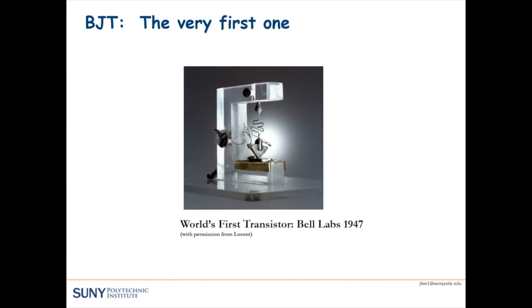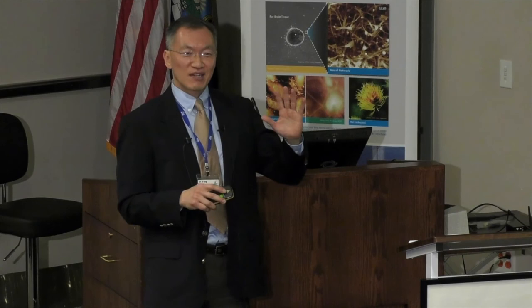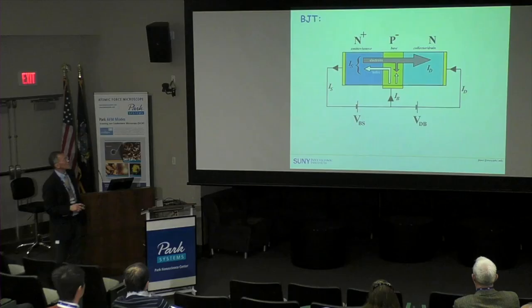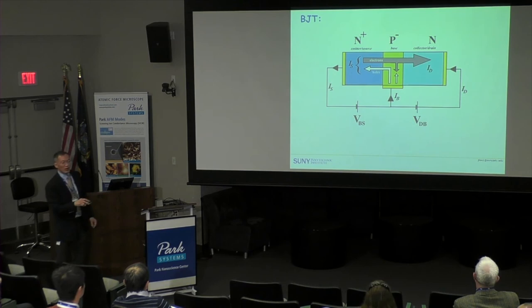Moving on to the next device: the very first transistor, from Lucent, was a point-contact transistor, very much like a bipolar junction transistor. Our device is analogous — still in early development, so somewhat kludgy. Many people know MOSFETs, but fewer know bipolar junction transistors, even though BJTs were the dominant transistor and people made CPUs with them until MOSFETs came along. In our device, rather than calling the terminals emitter and collector, I call them source and drain because the device also operates like a MOSFET.